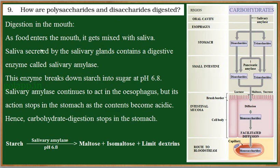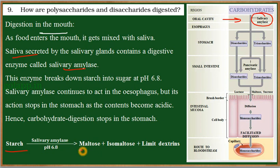Let's see how the digestion begins in the mouth. As the food enters into the mouth, it mixes with the saliva secreted by the salivary glands. The salivary glands have an enzyme called salivary amylase, which acts upon the complex carbohydrate — that is starch — and converts it into its simpler forms: maltose, isomaltose, and dextrin.